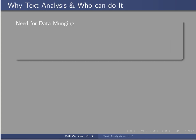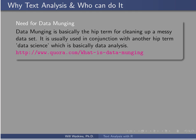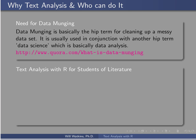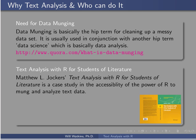Especially with text data, but also with any other data, there's a need for data munging — getting the data into a form and shape that can be analyzed. Jockers' book, Text Analysis with R for Students of Literature, is a great case study showing how students who are likely not computer geeks or statistics majors can be very successful in munging data, getting it into a shape they can handle, and being able to analyze it.